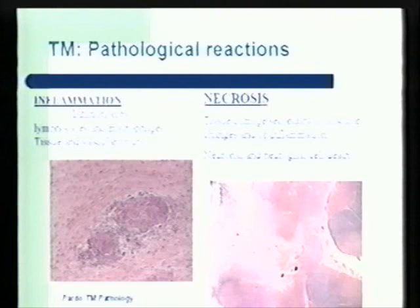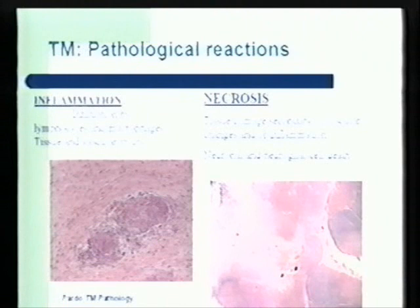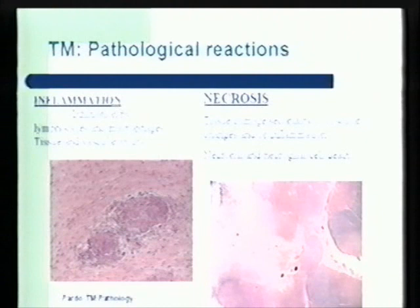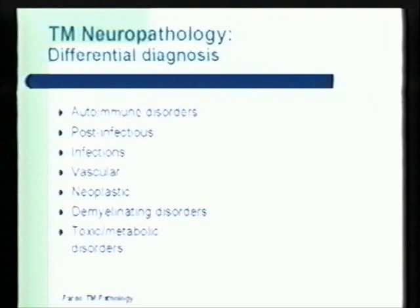Necrosis may result from trauma, infarction of the spinal cord, or a long-standing process of inflammation. The endpoint is death of the tissue — that is what we refer to as necrosis. We heard yesterday about the differential diagnosis of transverse myelitis, and I would like to describe some of the pathological observations we have about the various factors that contribute to transverse myelitis.